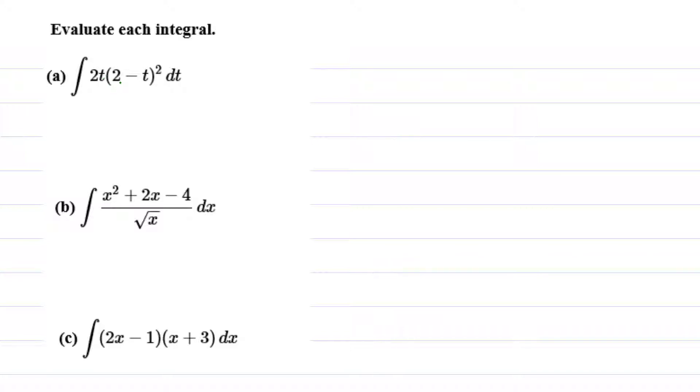To get rid of this product, look at (2 minus t) squared. We can simply multiply (2 minus t) with (2 minus t). When we multiply using FOIL, we get 4 minus 4t plus t².